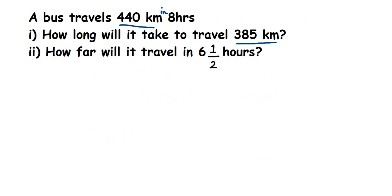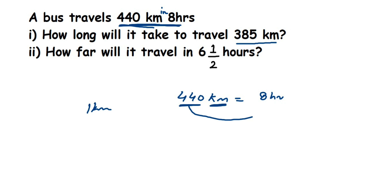We are going to find out for one kilometer how many hours it is taking, and then find out for 385 km. So what they have given: a bus travels 440 km in 8 hours, meaning 440 km equals 8 hours. To find one kilometer, we transpose 440 to the other side, so one kilometer equals 8 divided by 440 hours.